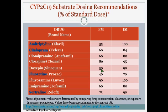CYP2C19 has a similar chart. In that same article or link, there are recommendations for percent of standard dose for 2C19 substrates. Again, the poor metabolizers have a lower dose than do the intermediate metabolizers.